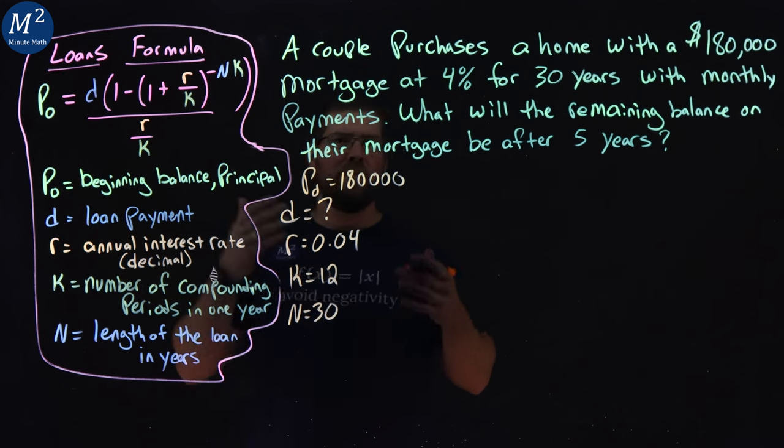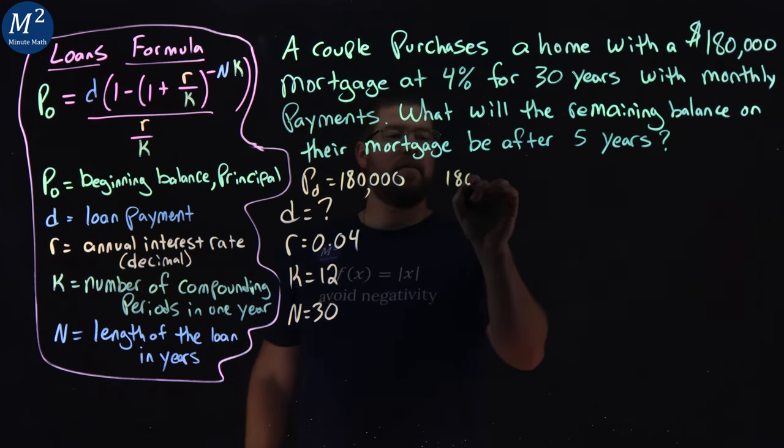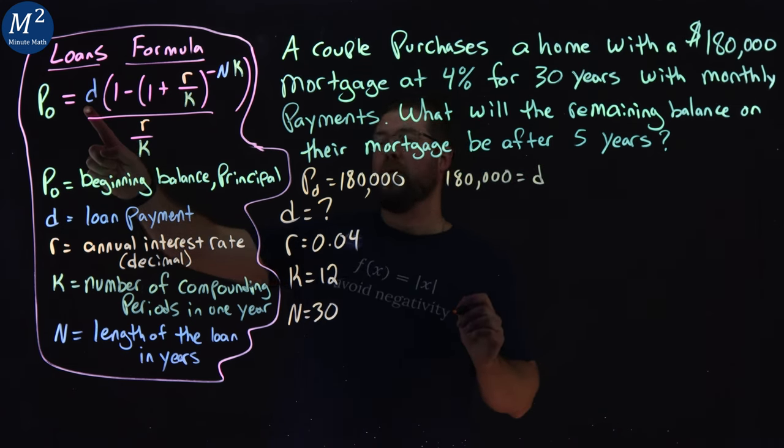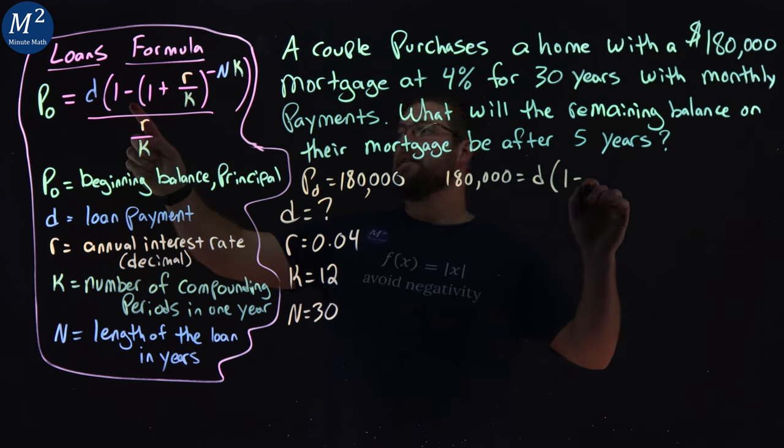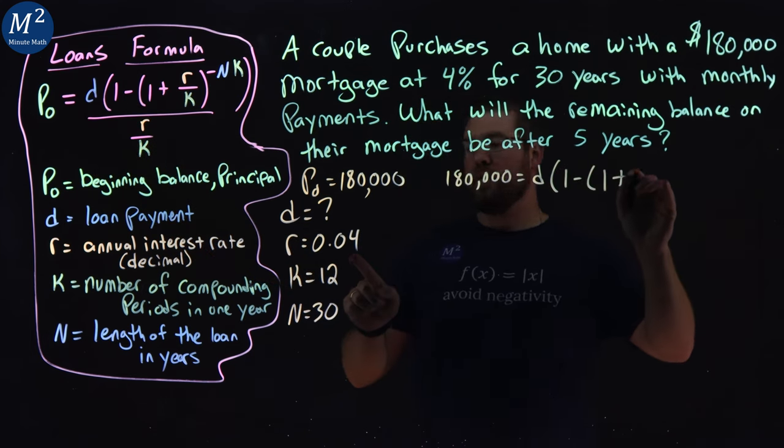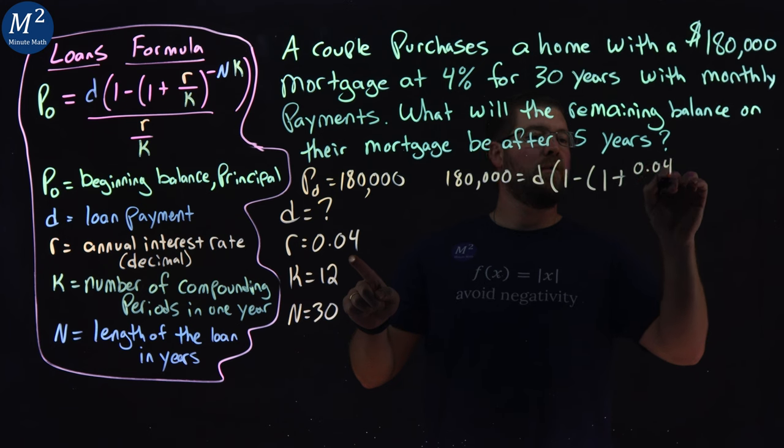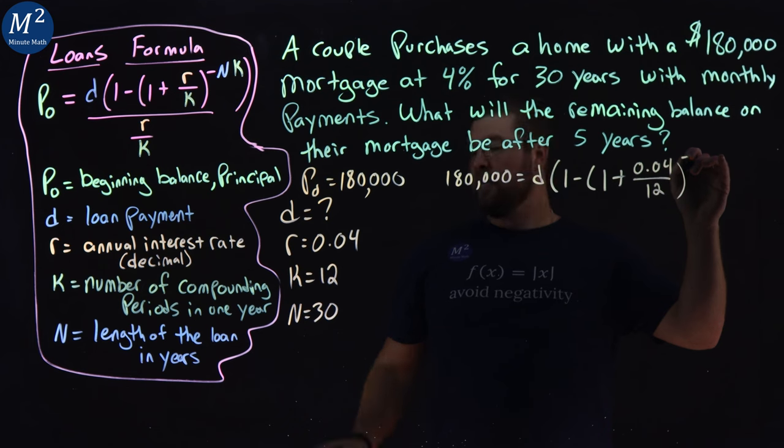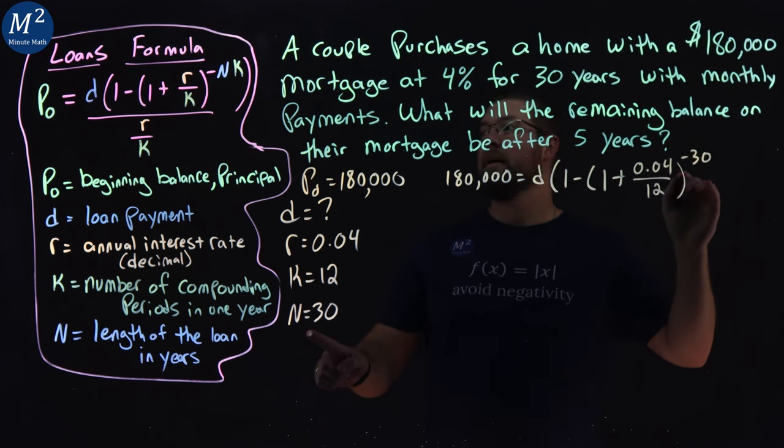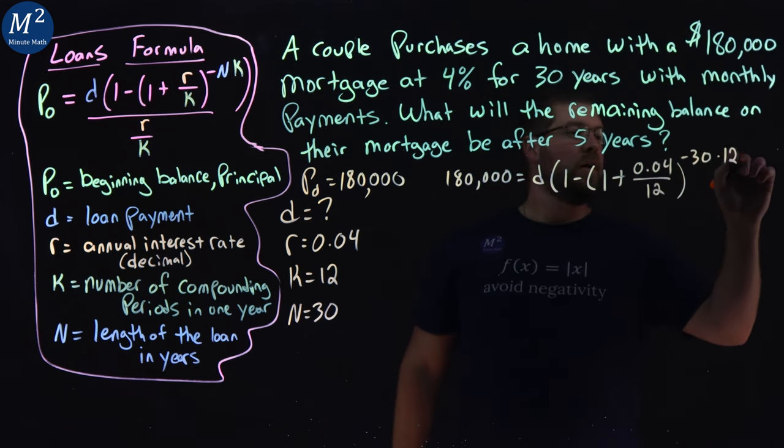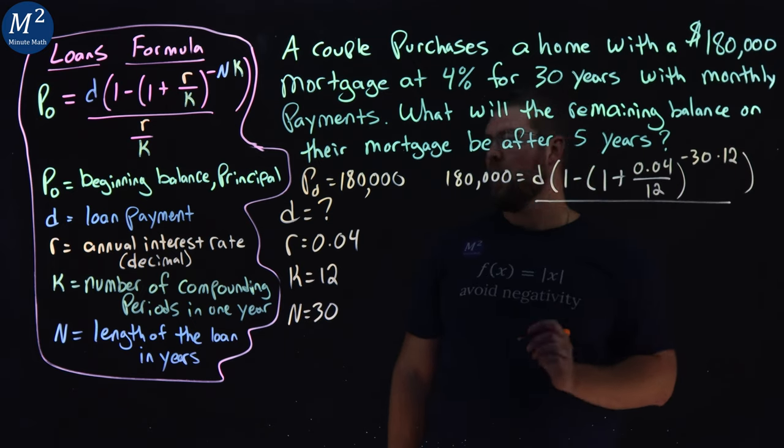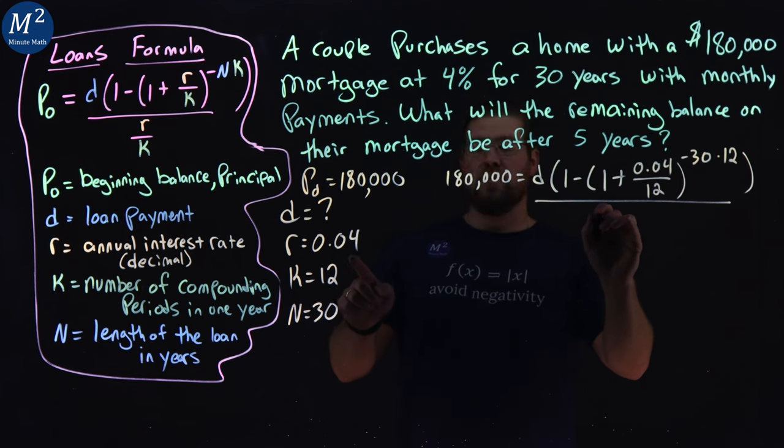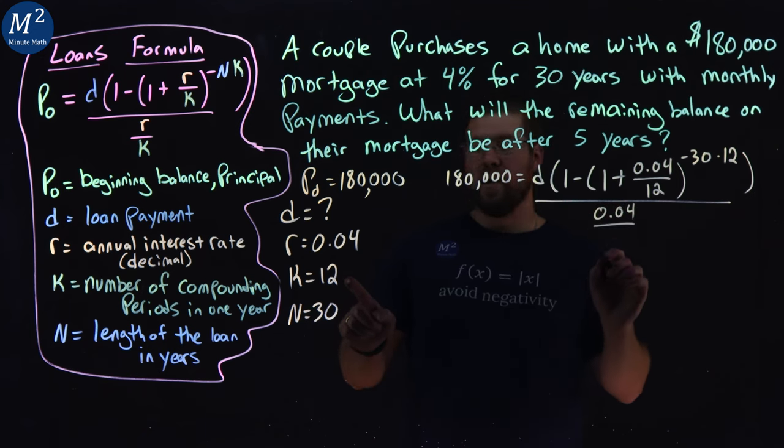This is going to help us find our monthly payment. We're going to use our loans formula and plug in what we know. $180,000 is equal to our D, which we're trying to find, the monthly payment, 1 minus, in parentheses, 1 plus R, 0.04, over our K value, which is 12, to the power of negative N, which is 30, times K, again, which is 12, close the parentheses, all over here, R over K. Our R value, again, is 0.04, over the K value, which is 12.